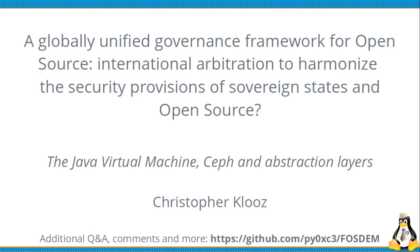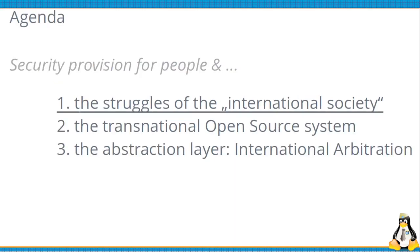Today I want to give you an alternative perspective and a potential approach that can help us tackle several issues. We will begin with the problems we have in the international society — the society of sovereign states as of today. Then we will look at the open source system, what it is, and in the end we will come to the abstraction, the international arbitration, and how it can give us possibilities we have not yet used.